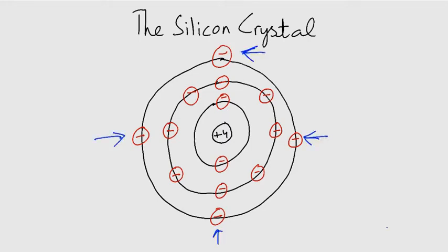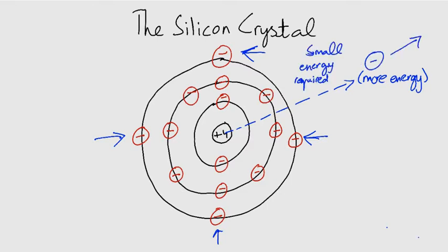Germanium has more shells than silicon and the farther a shell is from the nucleus, the more energy it has. So, it will take a very small energy for the valence electron in germanium to be triggered and leave. That is why it is unstable.